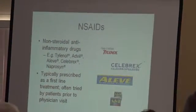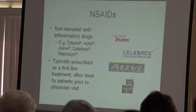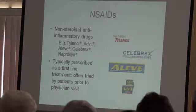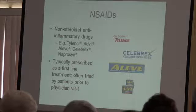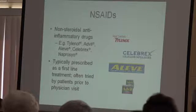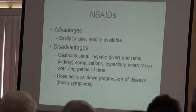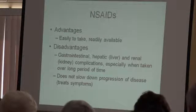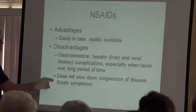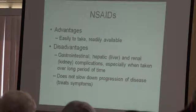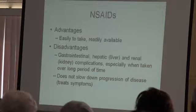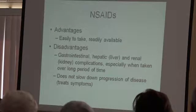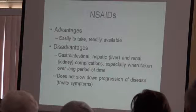NSAIDs - non-steroidal anti-inflammatory drugs - we all know these as Tylenol, Advil, and Aleve. They're typically prescribed as a first line of treatment and are often tried by patients prior to a physician visit. The advantages are they're easy to take and readily available - you can go to Walgreens and get some. The disadvantage is they do not slow down the progression of disease. They just mask the symptoms - the mechanism causing the arthritis is still prevalent and still having a huge effect on that joint. It's kind of like papering over cracks in the wall.